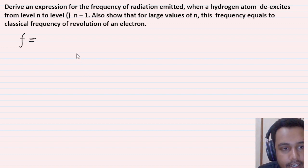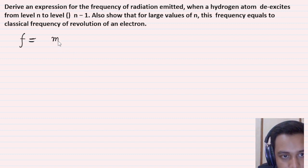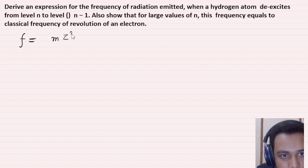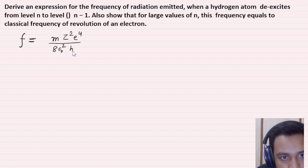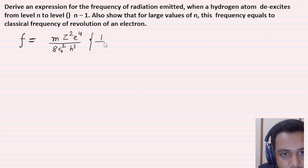So, the frequency formula — what is the formula? Frequency formula is: f = mZ²e⁴ / (8ε₀²h³) × [1/N1² − 1/N2²].